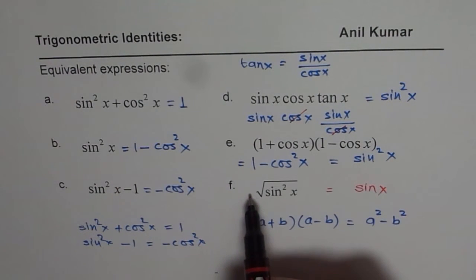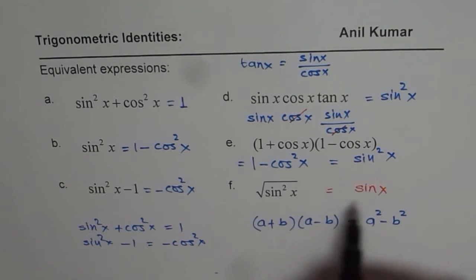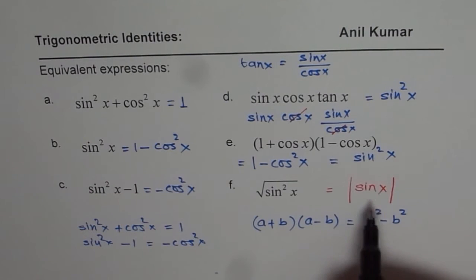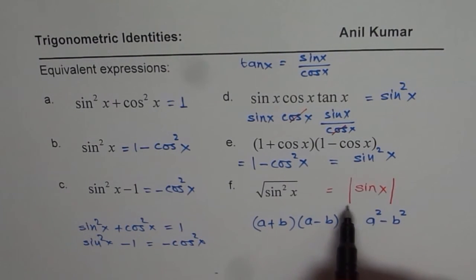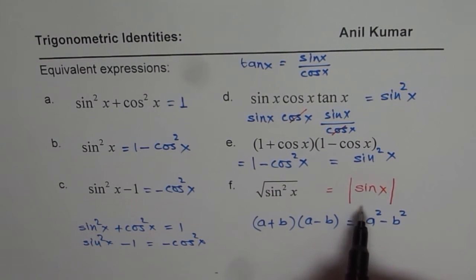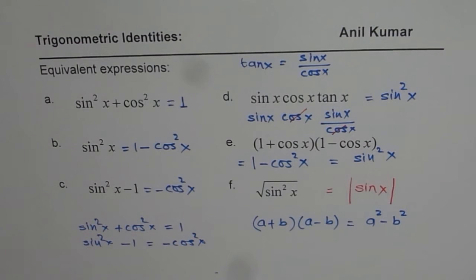And therefore, you should always write this as absolute value of sine x. So it has to be always positive. So that is the right expression for square root of sine square x. This is very important to understand. I hope with this, you are ready to solve some trigonometric identities. So we will start with simple ones to begin with. Thank you and all the best.